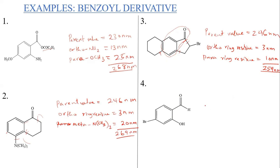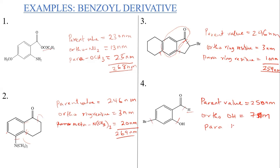For the fourth benzoyl example, the X here is H, so the parent value is 250 nm. There is an ortho-hydroxy group adding 7 nm and a para-bromo group adding 15 nm. Summing everything together: 250 + 7 + 15 = 272 nm lambda max.